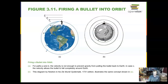If you stand on a mountain high enough and fire a bullet fast enough, it will go into orbit around the Earth. That speed needs to be about seventeen thousand five hundred miles an hour.